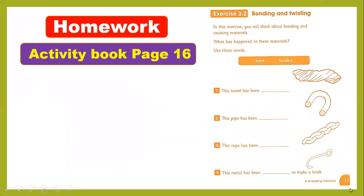The homework is on page 17. You have two words: bent and twisted. There are four different pictures — one, two, three, and four. You have to look at the pictures and check whether each one is bent or twisted. The answers are: twisted, bent, twisted, and bent. I hope you understand today's lesson. Please learn about how we can change the shape of materials in different ways — by hand, or by heating and using tools. Thank you so much, take care, goodbye.